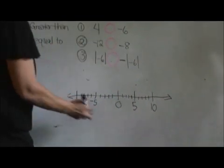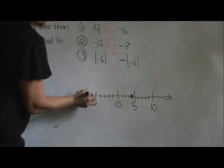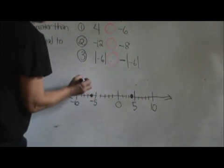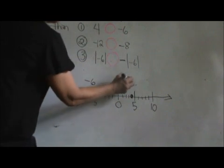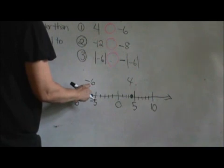I am actually going to use the number line for this. So we have 4 and then we have negative 6. Negative 6 is to the left of positive 4. So 4 has to be greater than negative 6.